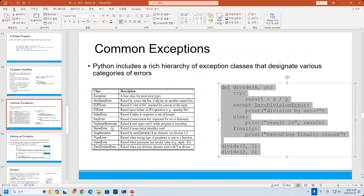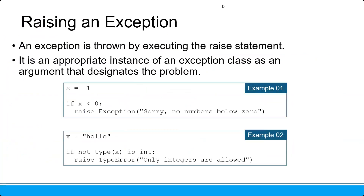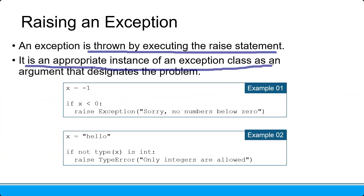You can look at this — there are so many exceptions. If you want to create your own exception, you can follow some guidelines. An exception is thrown by executing the raise statement. So you can make your own error, not just following the built-in exceptions in Python. It is an appropriate instance of an exception class as an argument that describes the problem.